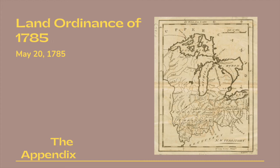A surveyor from each state shall be appointed by Congress or a committee of the states, who shall take an oath for the faithful discharge of his duty before the Geographer of the United States. The surveyors, as they are respectively qualified, shall proceed to divide the said territory into townships of six miles square, by lines running due north and south, and others crossing these at right angles, as near as may be, unless where the boundaries of the late Indian purchases may render the same impractical.